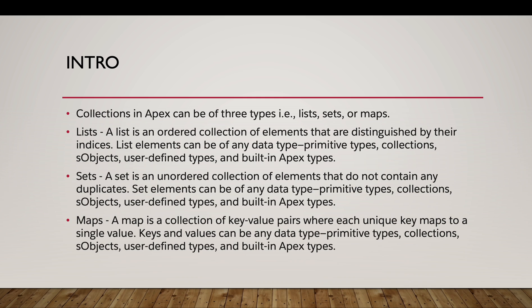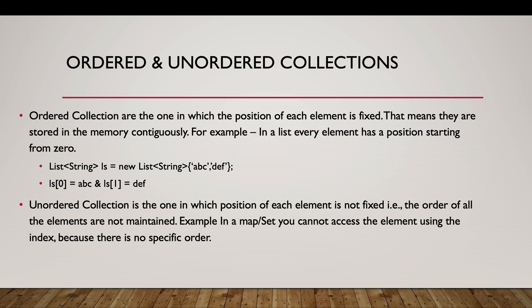Because a set is unordered, you cannot access set elements using indices — you have to loop through all the elements. A map is a collection of key-value pairs where each unique key maps to a single value. Key-value pairs can be of any data type. Map keys are always unique and cannot be duplicated, but values can be duplicated across different keys.